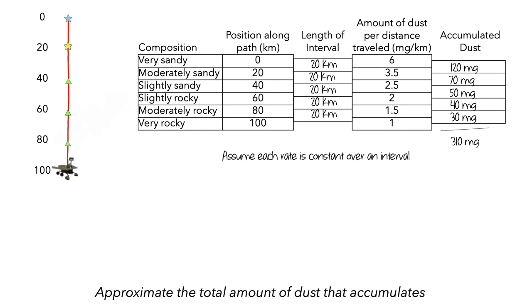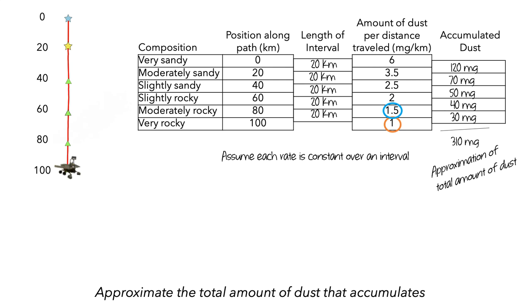It's important to keep in mind that we've been making a big assumption. Since we assumed that each rate was constant over the corresponding 20 kilometer interval, our answer of 310 milligrams isn't necessarily the actual amount of accumulated dust — rather, it's an approximation. One thing to notice is that we always used the rate of dust accumulation at the beginning of each interval. For the interval from 80 to 100 kilometers, we used 1.5 milligrams per kilometer for the entire interval, even though the rate had dropped to 1 milligram per kilometer by the end. We could have also done the entire calculation using the rates at the end of each interval instead.